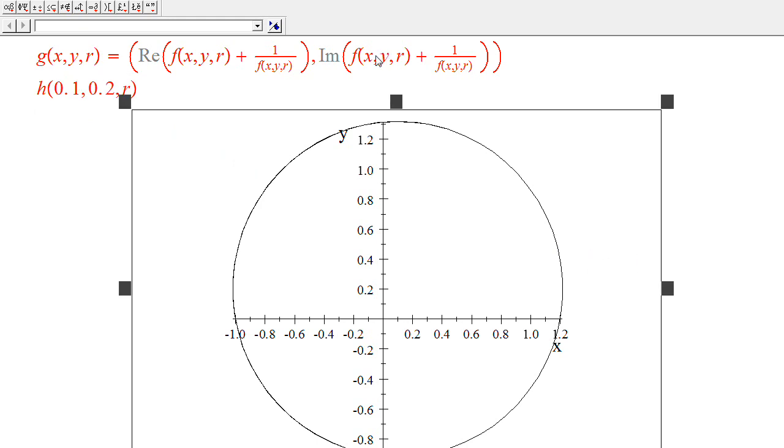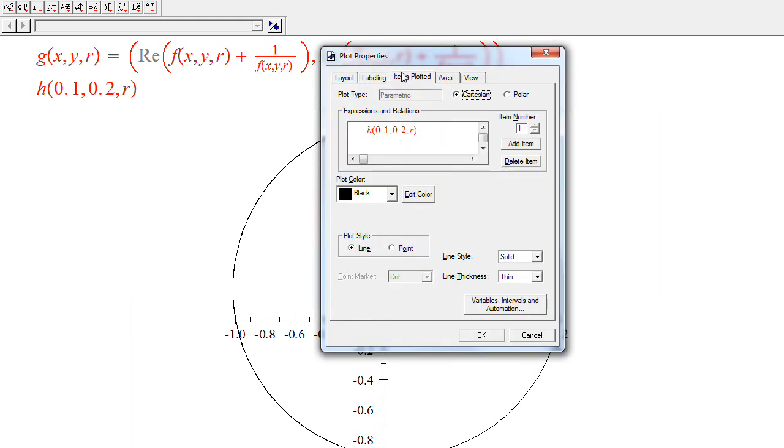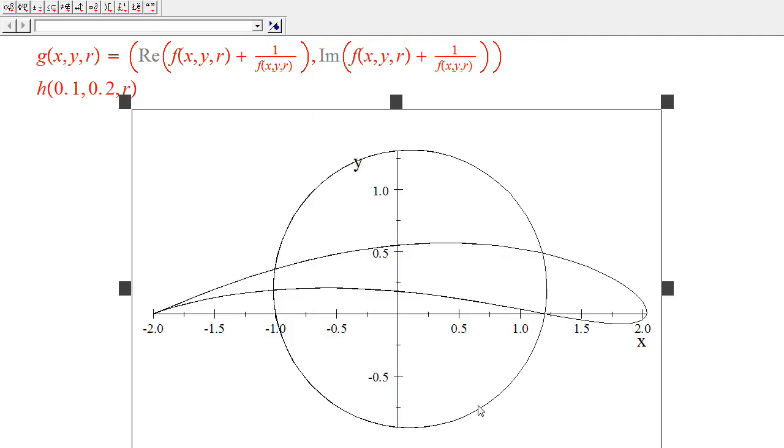Let me now click on this and I click on this and go to Item Plot and add an item here, which is G. So now I'm going to illustrate the Joukowsky airfoil. So, this was calculated rather quickly.